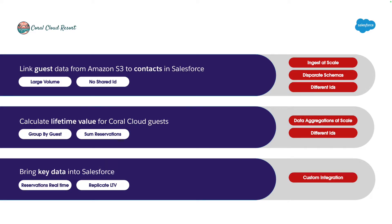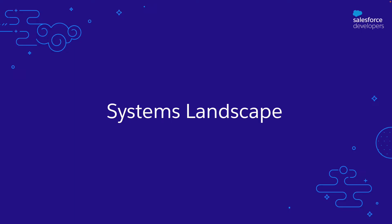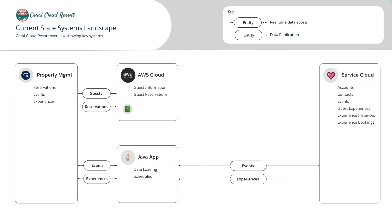Let's take a look at their current system architecture. This is the current state systems landscape at Coral Cloud Resort. External systems master reservation data, and they're currently stored in Amazon S3. Events and experiences that guests can participate in are currently loaded into Salesforce and available as custom objects. The hotel has no way of tying reservations being captured to a Salesforce contact record in Service Cloud, and the data is currently siloed. So we've been tasked with exploring Data Cloud.